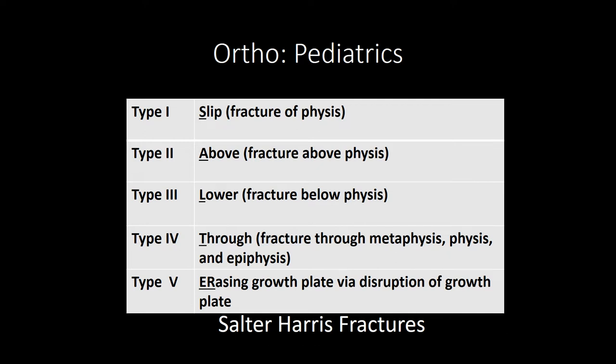For child abuse, you're going to see vertebral compression fractures, mid-shaft humerus, mid-shaft tibial fractures, and rib fractures. You need to have high suspicion whenever you see those in children. The best test is a skeletal survey, which is a series of x-rays of all the major bones of the body, and it should be done in all cases of suspected child abuse.